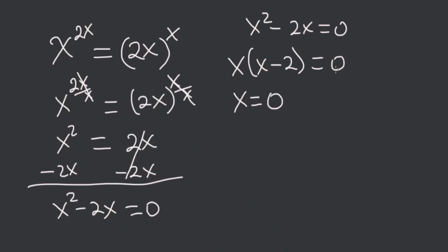If I divide both sides by x, I get that x minus 2 is equal to 0. If I add 2 to both sides, I get that x is equal to 2.